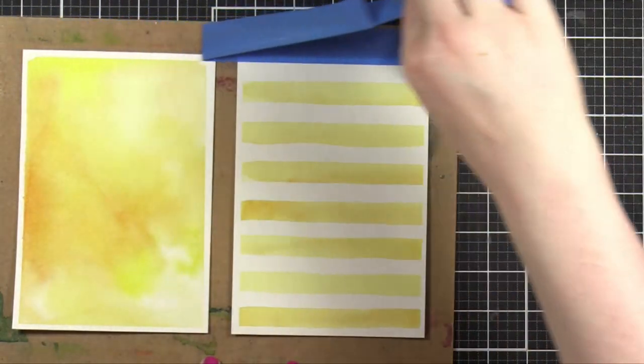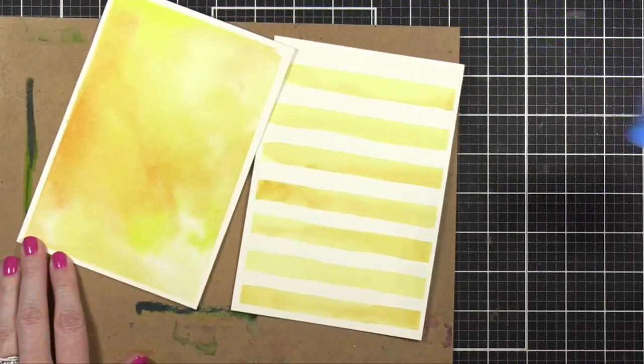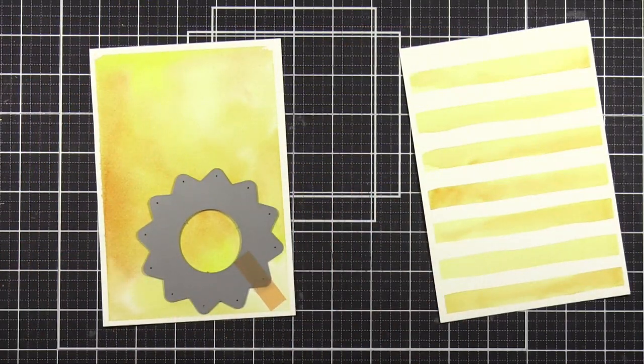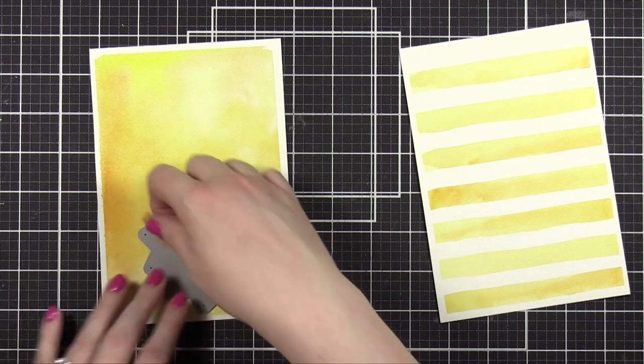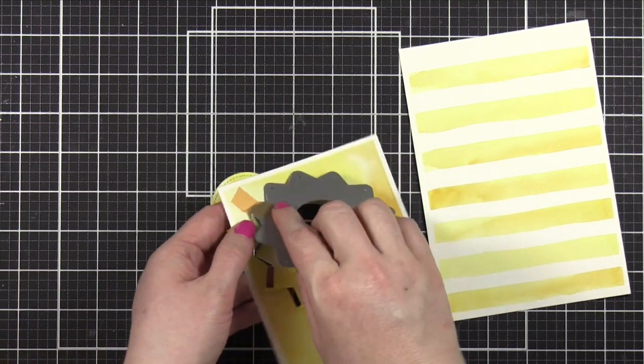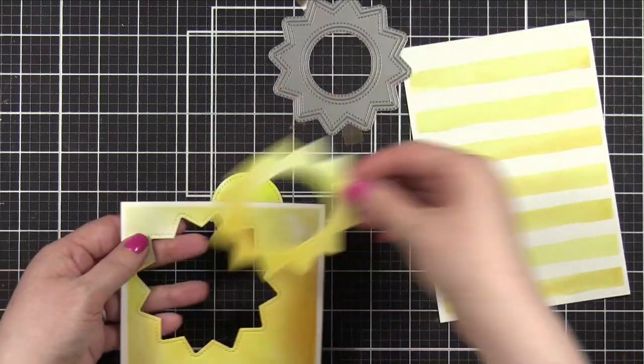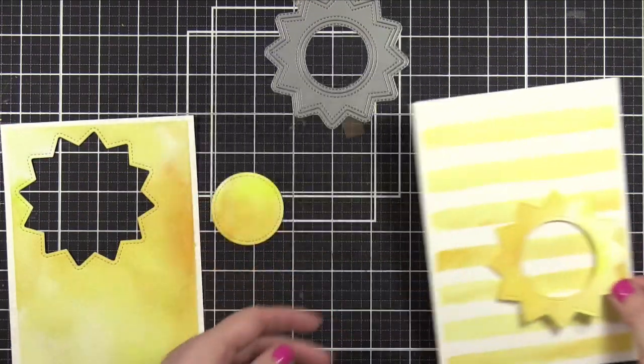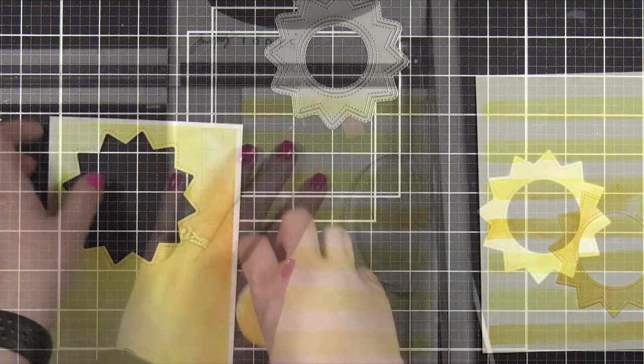After everything was dry, I removed the watercolor pieces from my board, and I'm going to take that die and out of my more solid background, I'm going to die cut that sun shape. And it looks absolutely beautiful, but when I place it on top of my stripes, I noticed that it kind of got a little bit lost. So we'll address that in a bit.